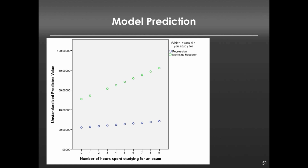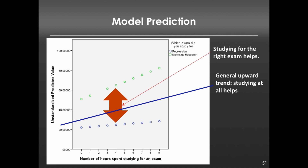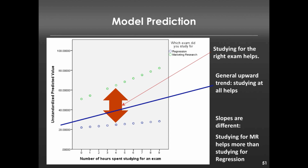We can plot this to see what the predictions look like visually. On the x-axis is the number of hours spent studying; on the y-axis is the predicted value from our model. Green circles represent predicted scores if you studied for marketing research; blue circles are predicted scores if you studied for regression. Three things are visible: the green circles are much higher than the blue circles overall (the benefit of studying for the right exam); there is a slight upward trend, though not significant, for studying at all; and the interaction is observed through the difference in slopes — the green slope is much steeper, meaning more hours yield greater returns, while the blue slope is nearly flat.